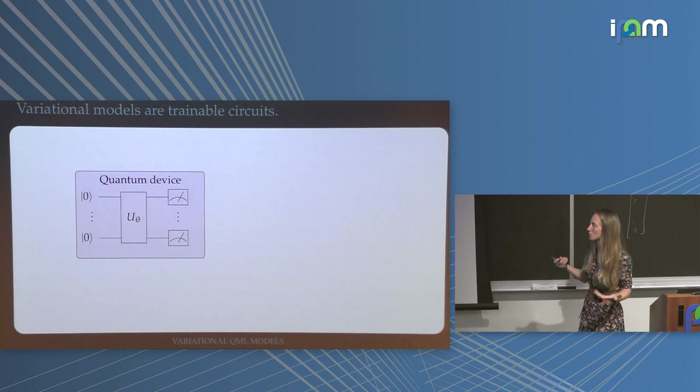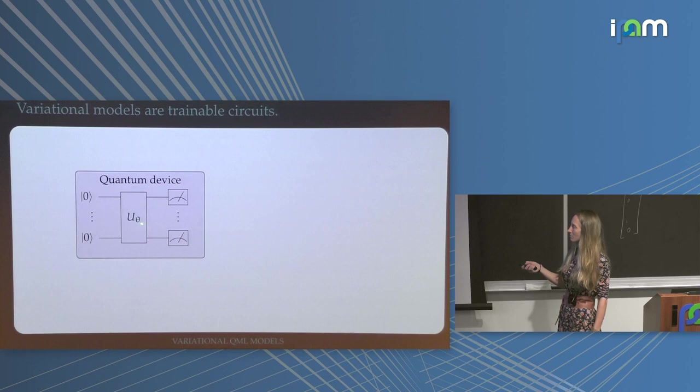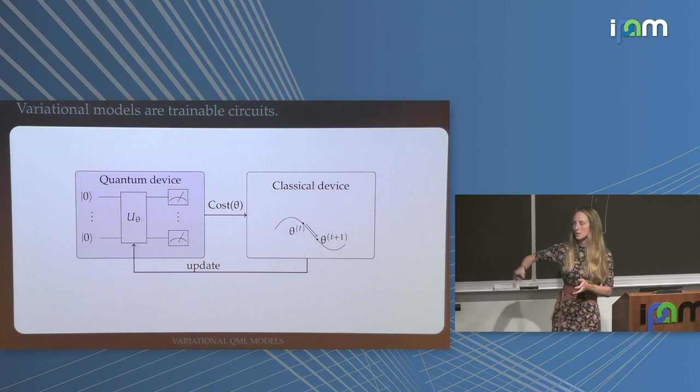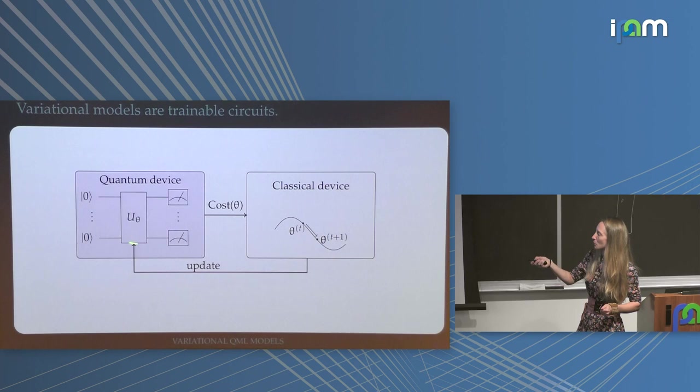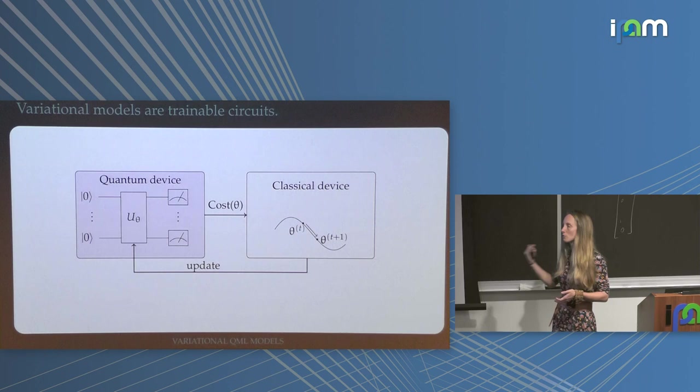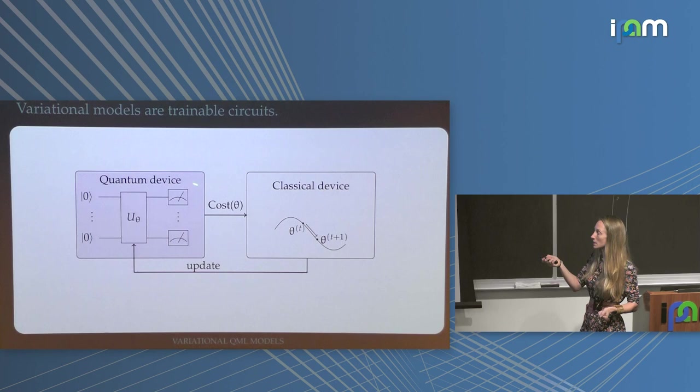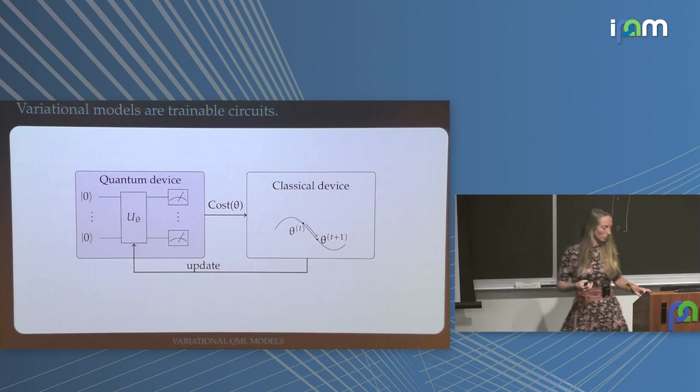Only very recently have people thought about not decomposing U into fixed gates, but making an ansatz that depends on some parameters, then using a classical optimization routine to find the best parameters. How this works: you prepare and execute the algorithm, you measure the first qubit. Every time you measure you find a different answer — zero, zero, one, one, zero. You take the average — this is the expectation of your operator, a deterministic value. You throw it into a classical optimizer and go around and around to optimize your quantum computation.